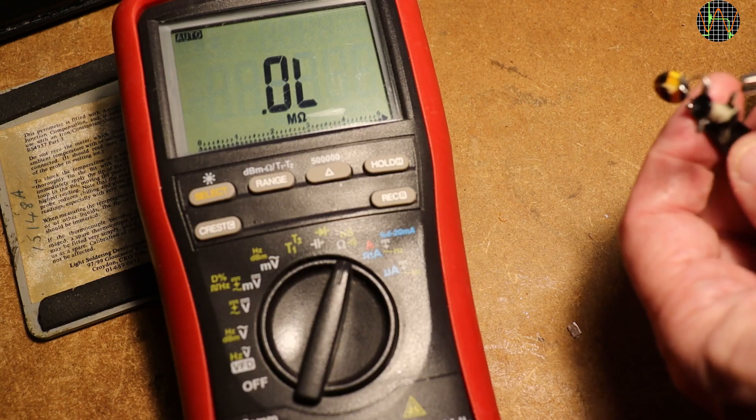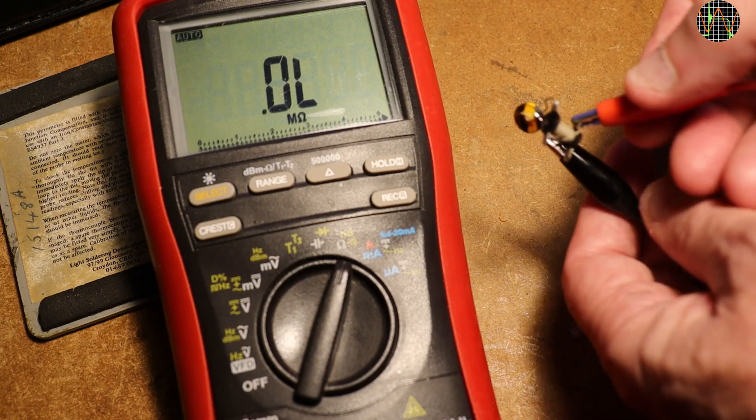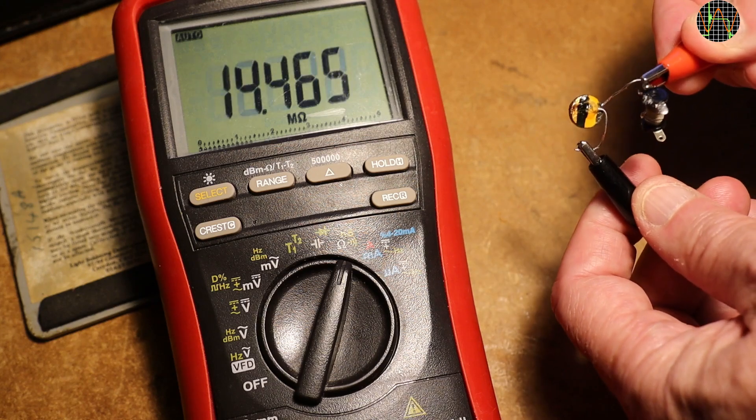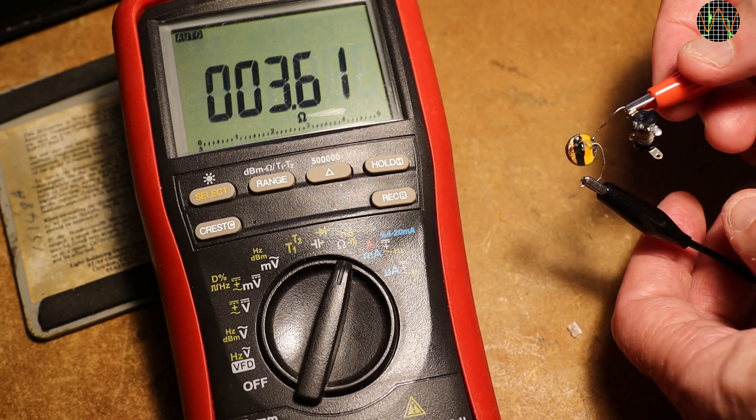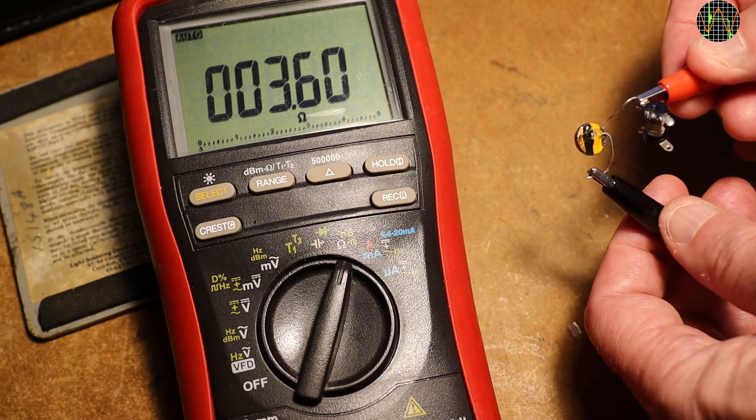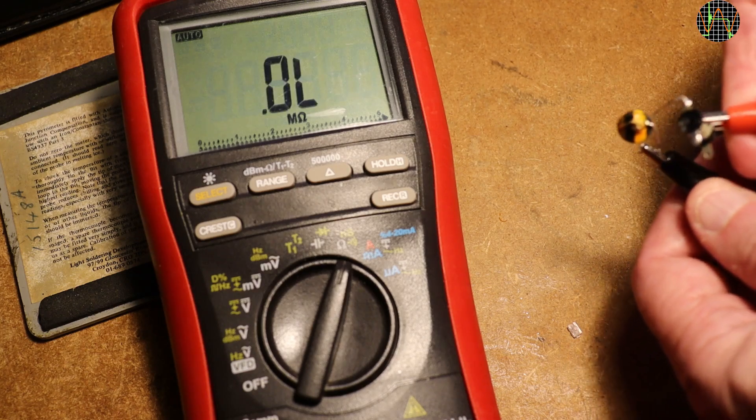So what resistance was in there? Oh shoot, I must have somehow broken it during the extraction because it now reads infinite. I should have measured the whole assembly before trying to unstick it from inside the instrument. Well, at least the disk itself has 3.6 ohms so it is the wire wound part that is broken.